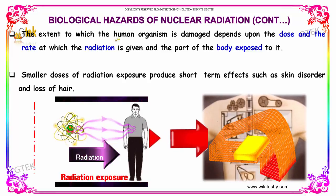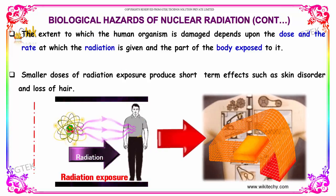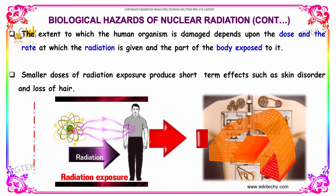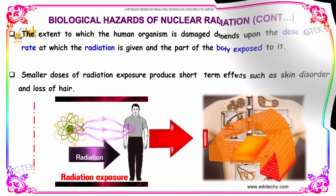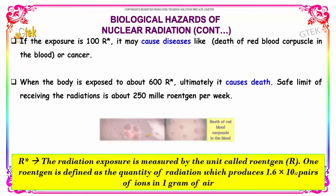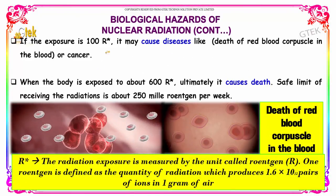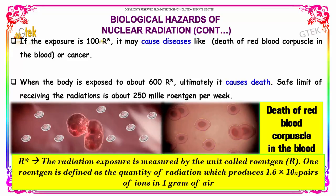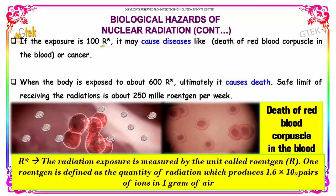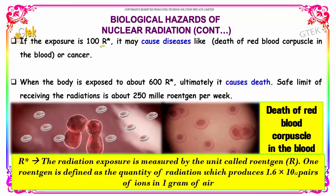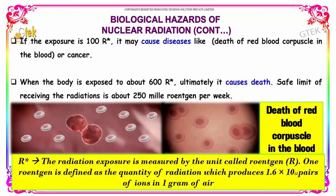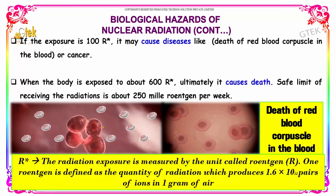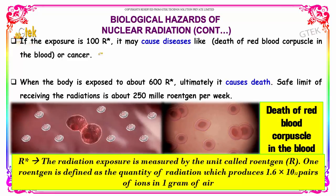Smaller doses of radiation exposure produce very short-term effects such as skin disorder and loss of hair. If the exposure is more than about 100 roentgens — roentgen being the measure of radioactivity or nuclear radiation — it may cause death of red blood corpuscles in the blood, or it will lead to cancer.